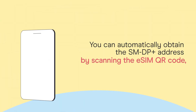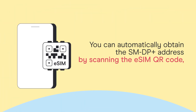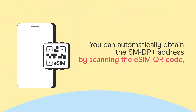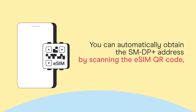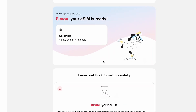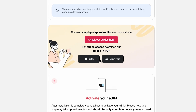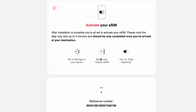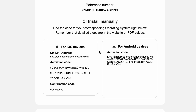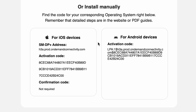You can automatically obtain the SMDP Plus Address by scanning the eSIM QR code, or find it in the email or message you received after your purchase, as shown in the video.